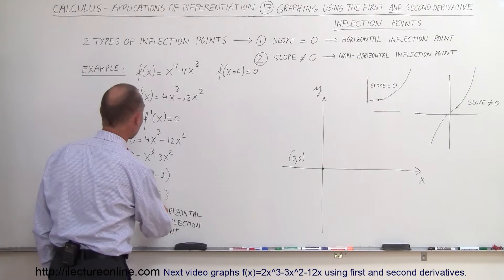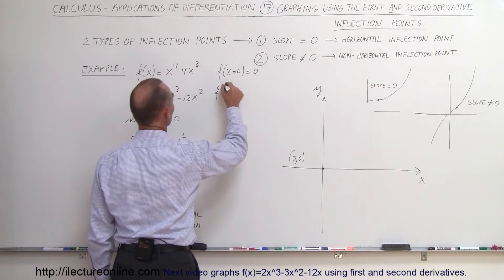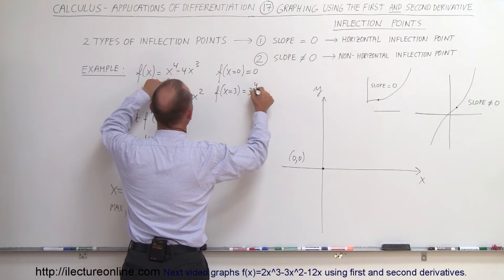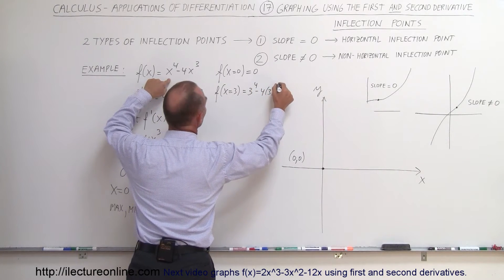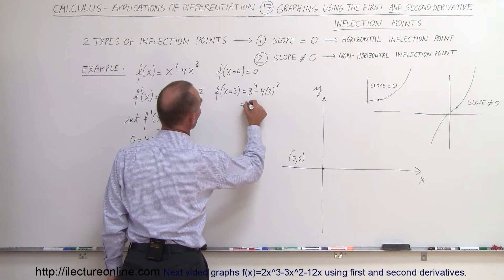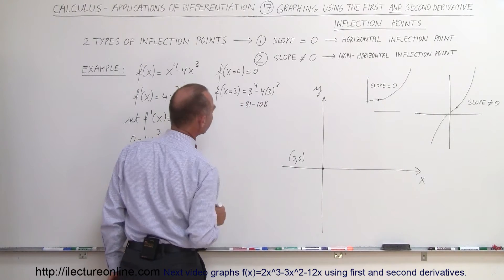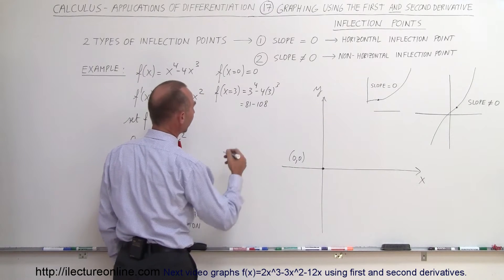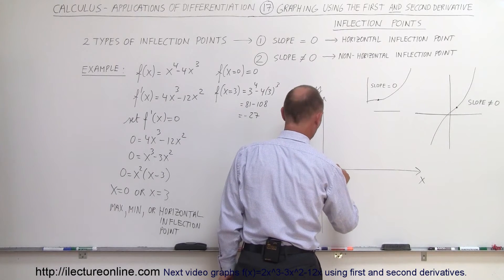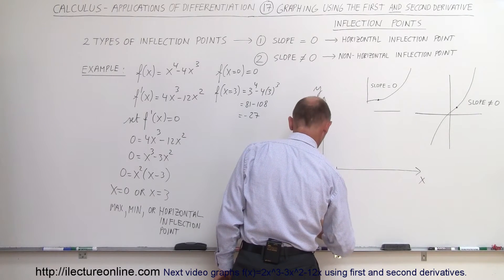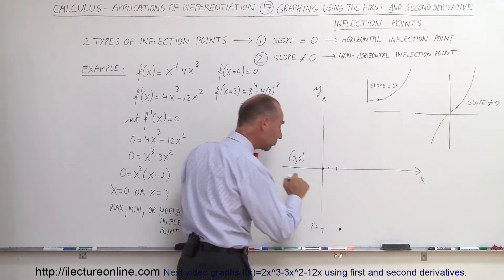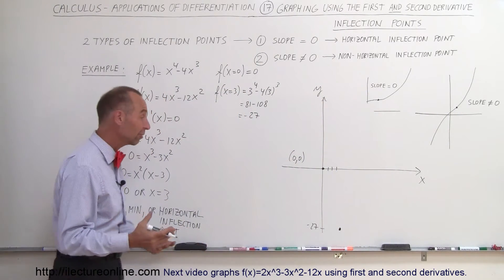The second point: f(3) = 3⁴ - 4·3³ = 81 - 108 = -27. So when x = 3, y = -27. That's this point right here on the graph. Again, that may be a max, a min, or a horizontal inflection point — we don't know yet which one it is.